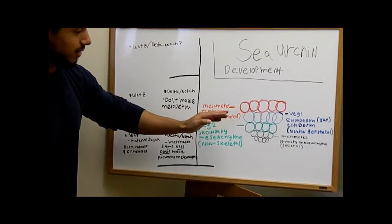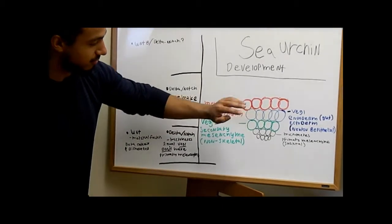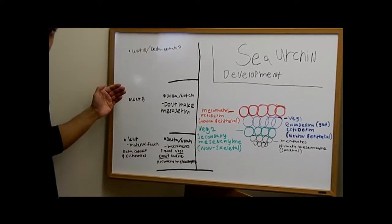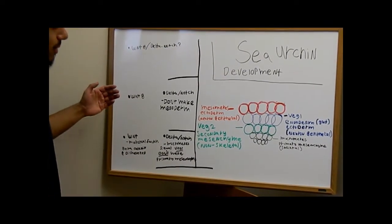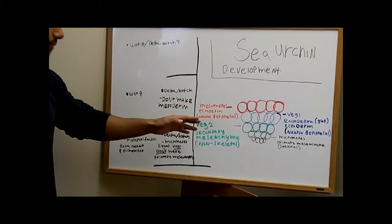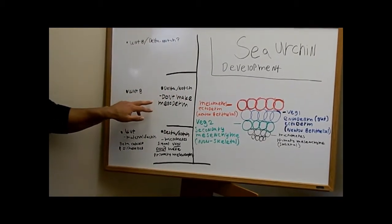Moving on, we have occurrences between veg2 and veg1. We have the Wnt8 pathway, which allows the specificity to continue in the cascade of the development. And we also have the delta-notch pathway, which allows veg2 to tell veg1 to now make mesoderm.